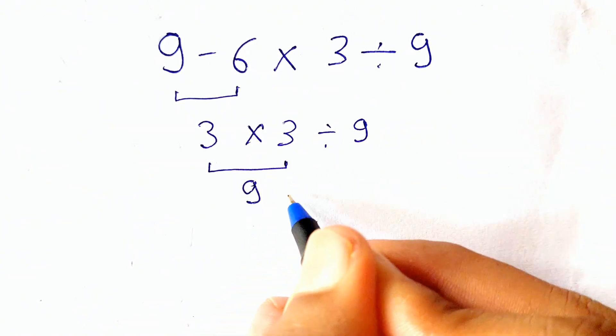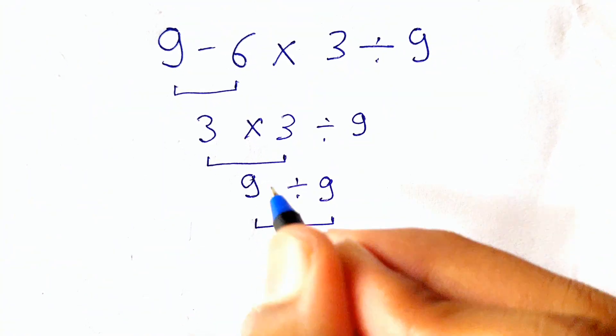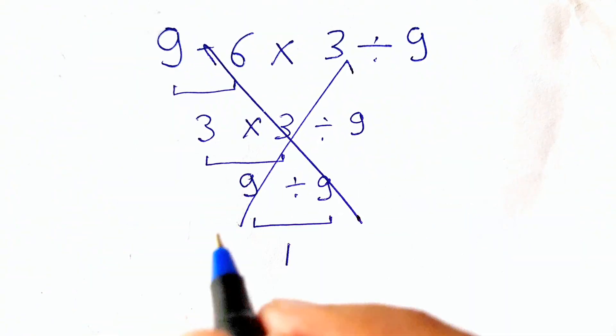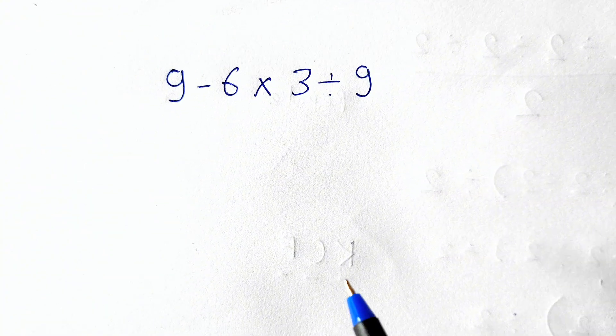9, and then 9 divided by 9 simply gives us 1. But wait a second. If you think it's correct, you need to keep watching this video because it's totally wrong.